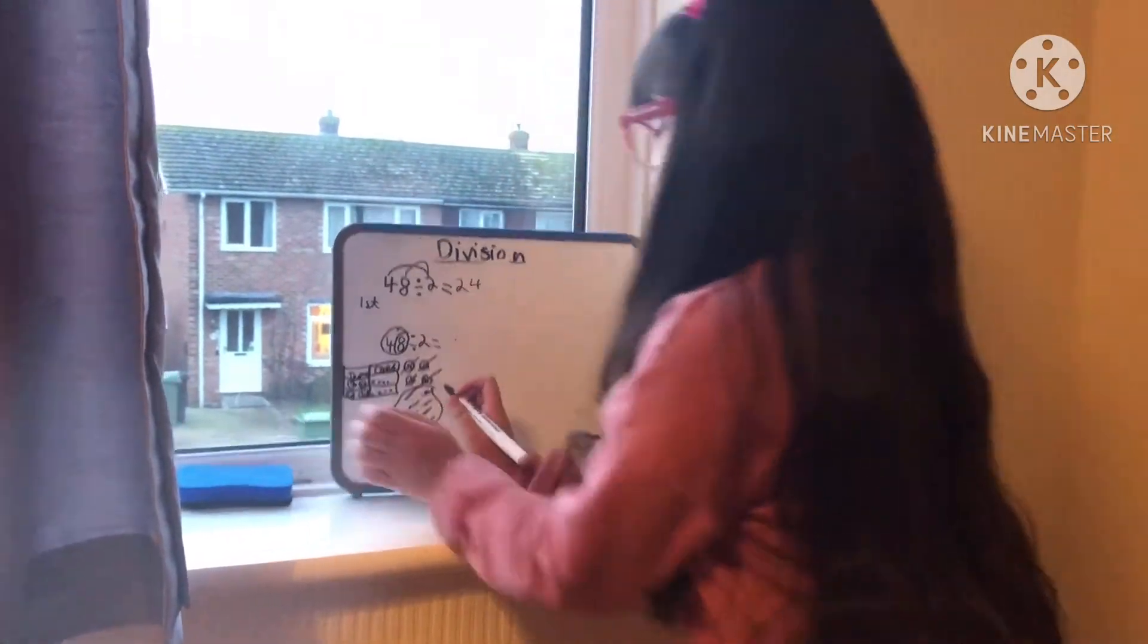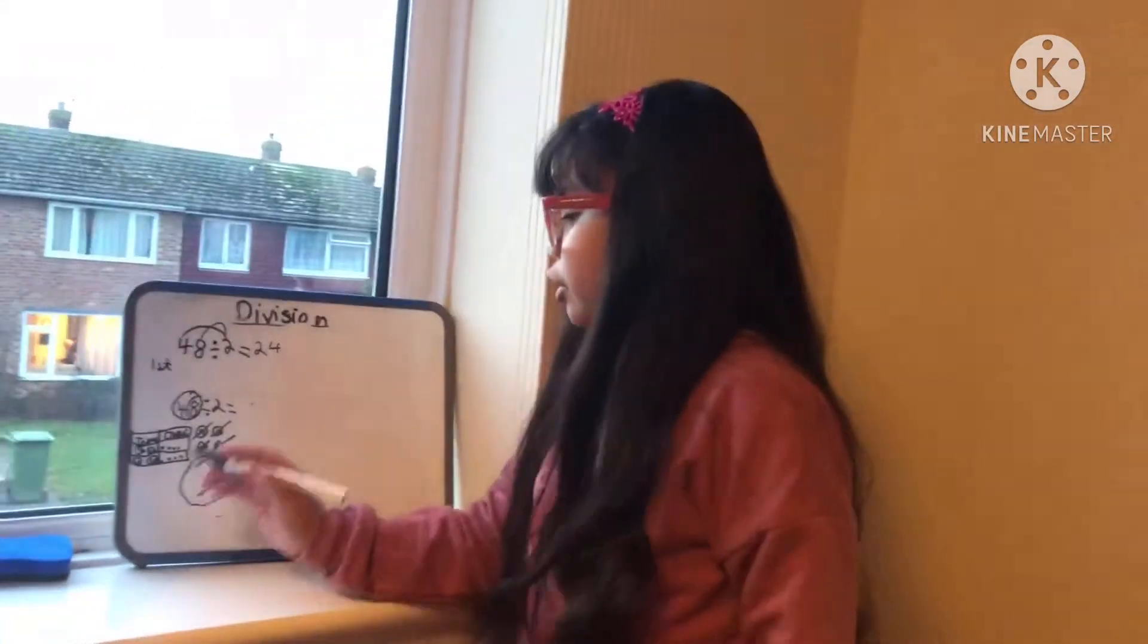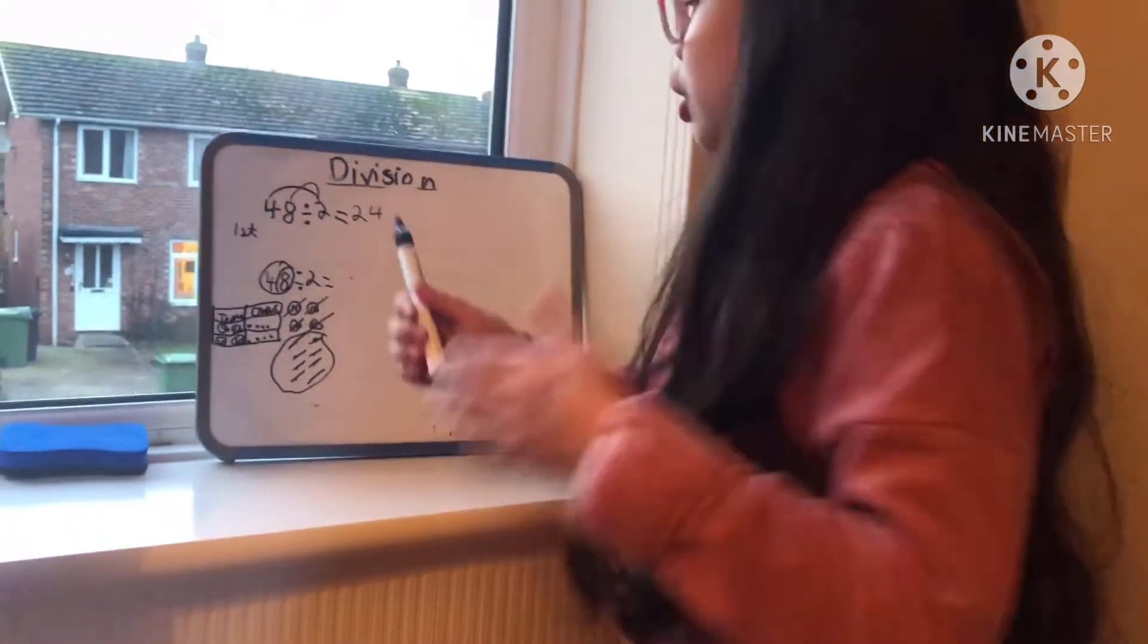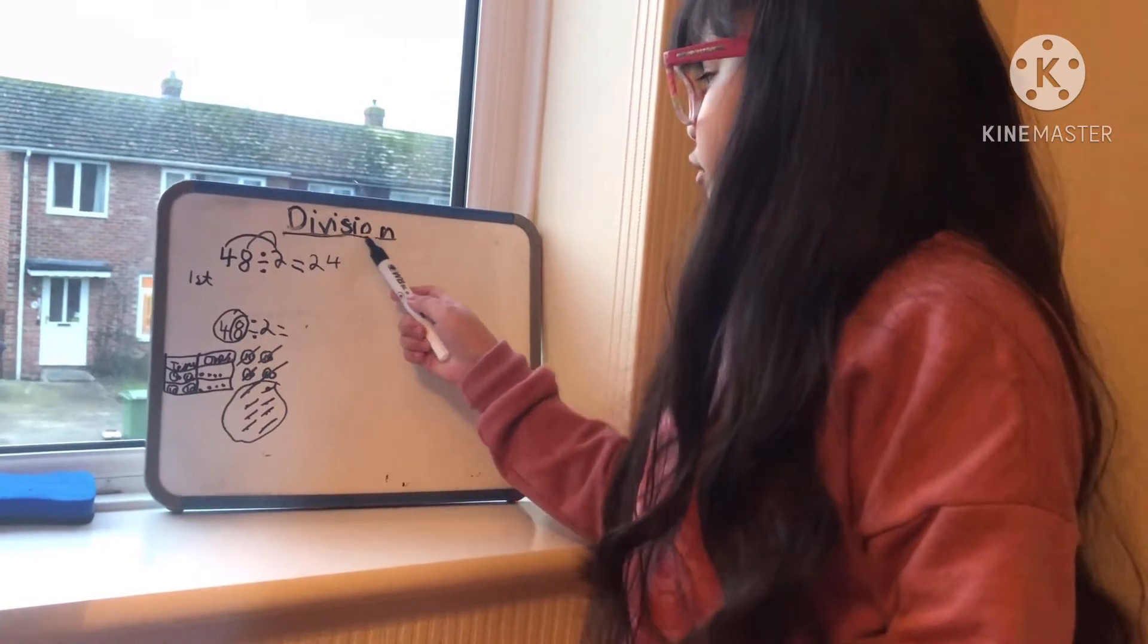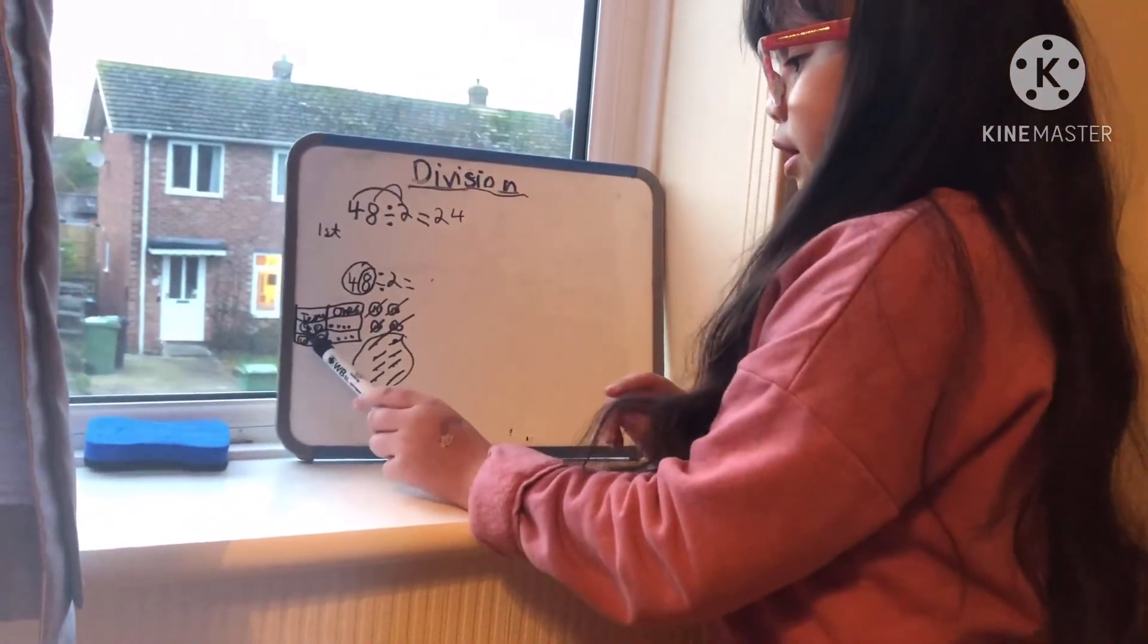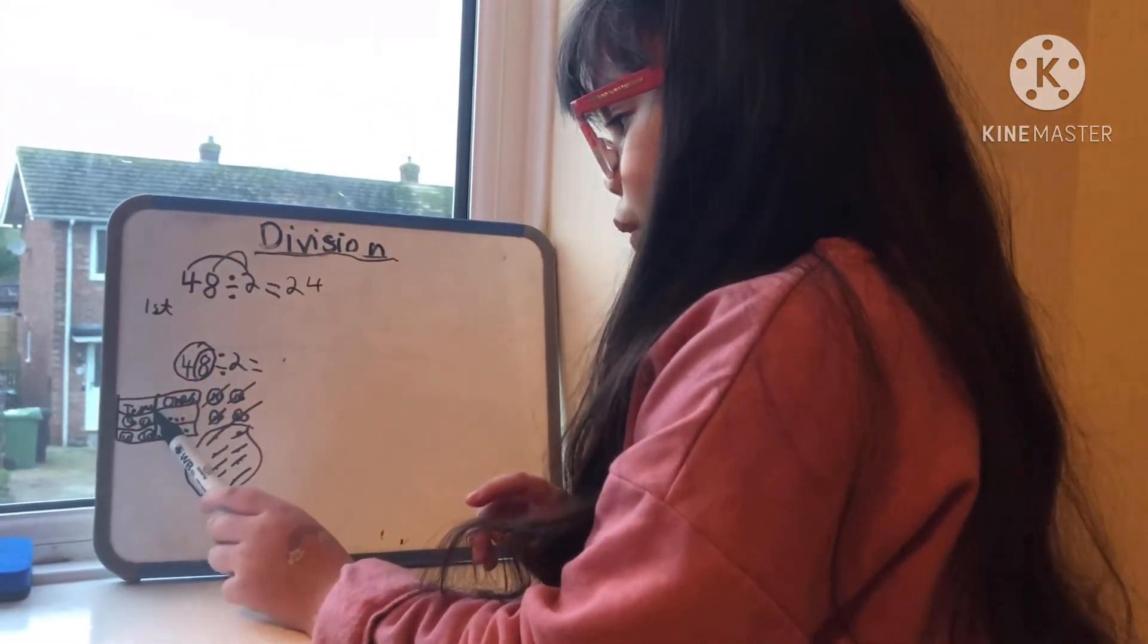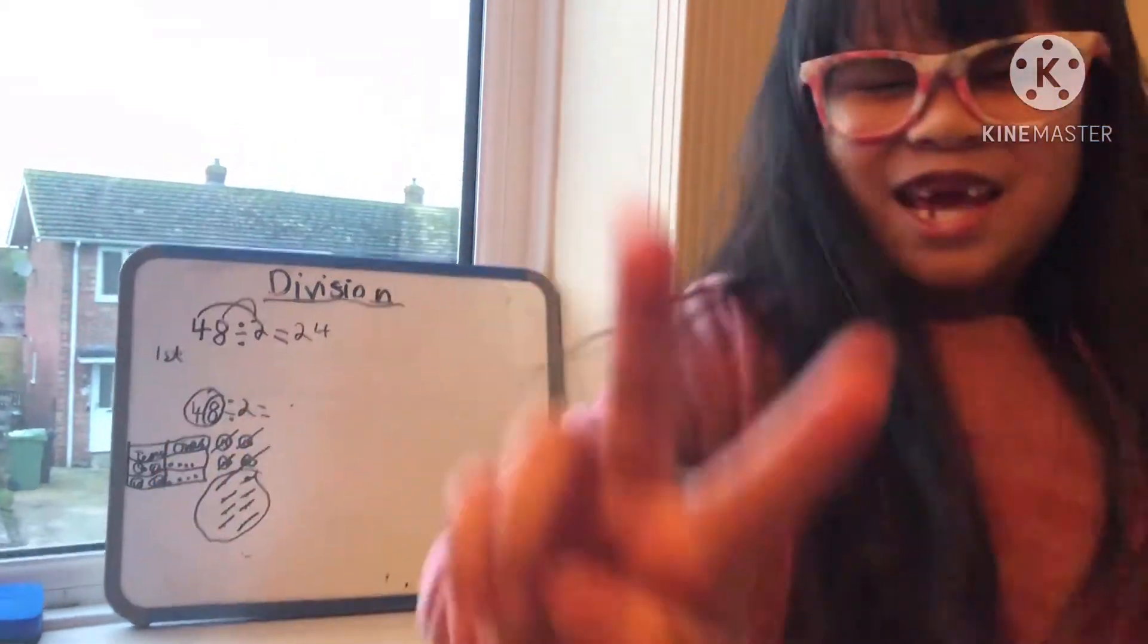What we have to do lastly is we are going to count only this first row because we can't count all together, and this is division. Let's start counting: 10, then 20, 21, 22, 23, and 24.